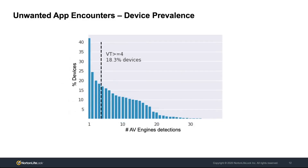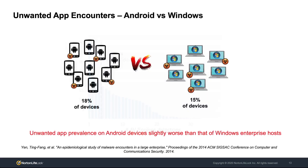Using this threshold, we are able to measure that at least 18% of the devices in our dataset have one malware encounter during the 4-month period that we analyze. Comparing this to prior measurements of Windows Enterprise hosts, this indicates that Android devices have an unwanted app prevalence similar and possibly slightly higher than that of Windows Enterprise hosts, though we note there is a difference in time between our work and prior measurements.